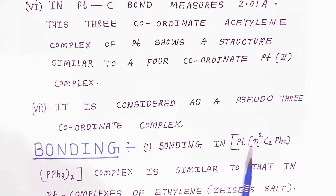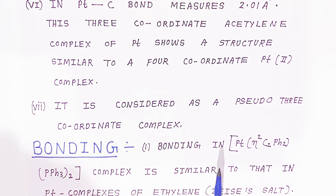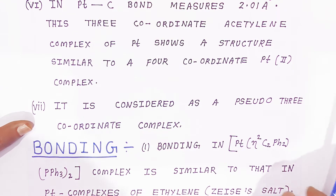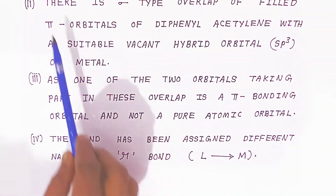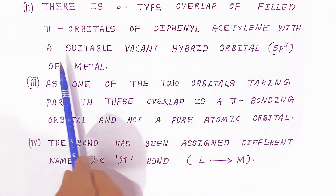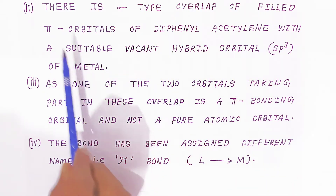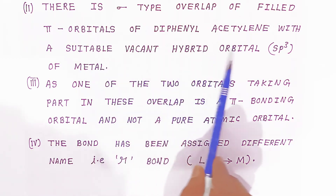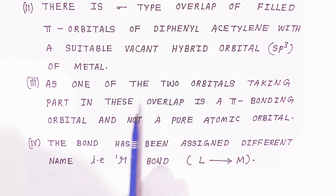The bonding in bis triphenyl phosphine diphenyl acetylene platinum complex is similar to that of the platinum complex of ethylene, that is Zeise's salt. There is a sigma-type overlap of the filled pi orbitals of diphenyl acetylene with the suitable vacant hybrid orbitals — sp³ hybrid orbitals — of the metal. The pi orbitals of diphenyl acetylene form bonds with the sp³ hybrid orbitals of the metal.